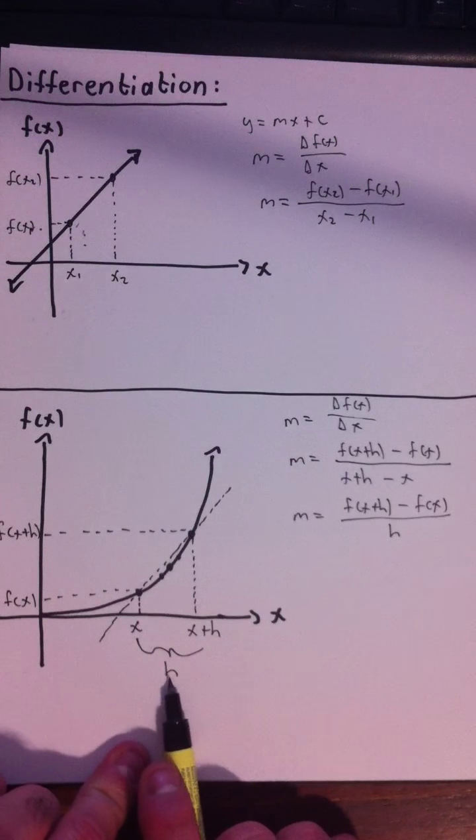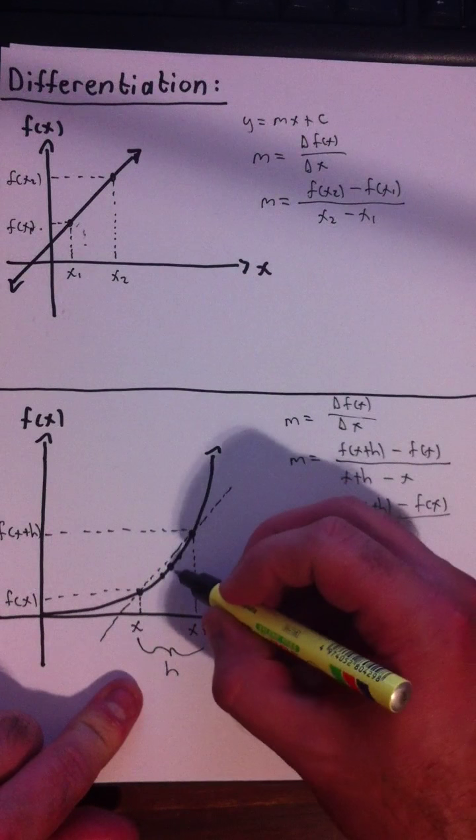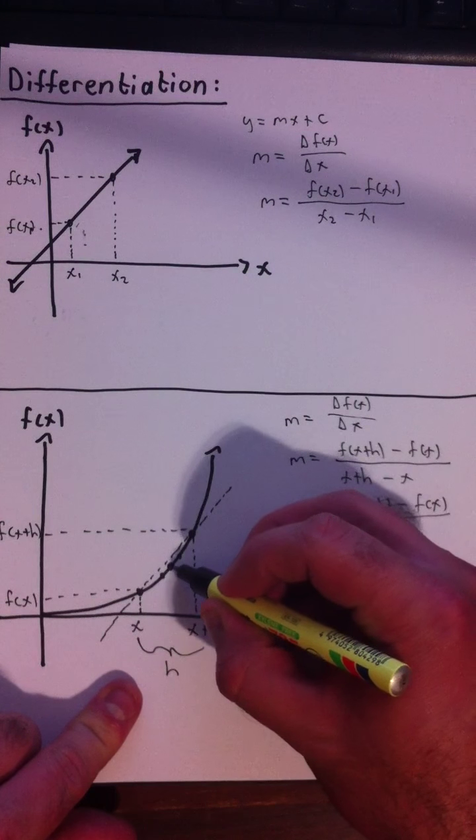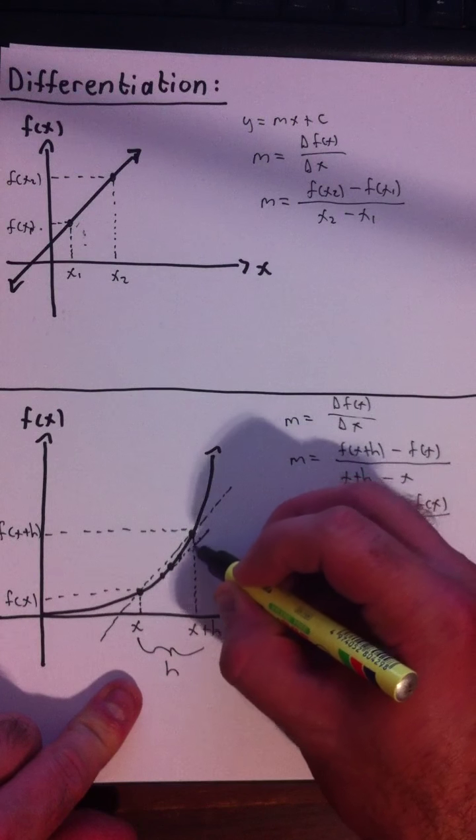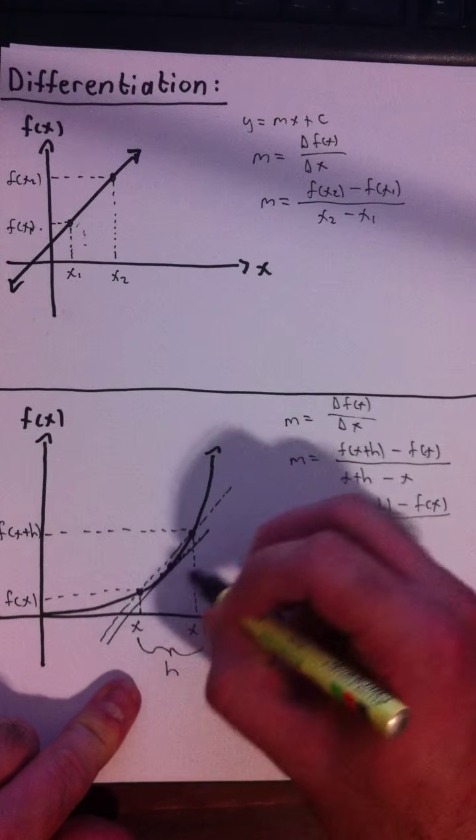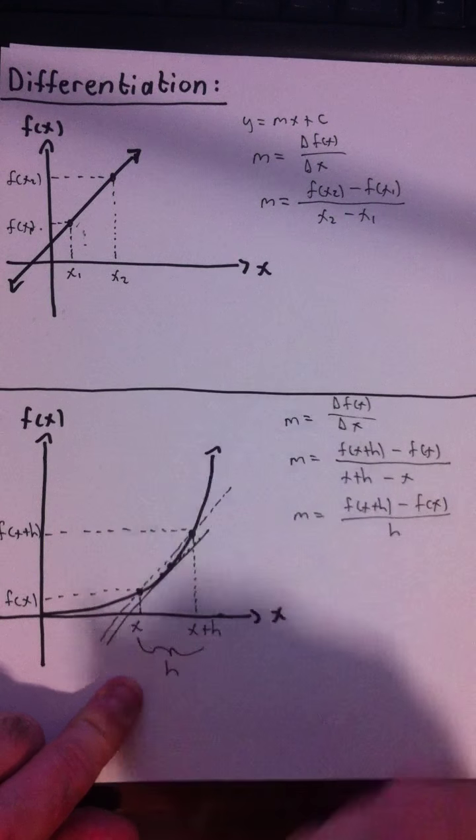That tells us we want to find this gradient. Eventually, once we get to zero distance apart, we'll have the gradient of a tangent to this curve. We'll only barely touch it at that point.